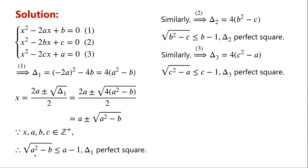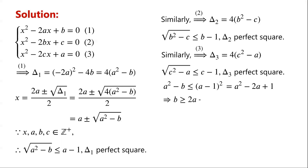As the square root of a squared minus b is less than or equal to a minus 1, so a squared minus b is less than or equal to (a minus 1) squared. Since (a minus 1) squared equals a squared minus 2a plus 1, the a squared terms cancel, giving us b is greater than or equal to 2a minus 1.